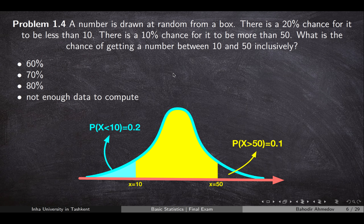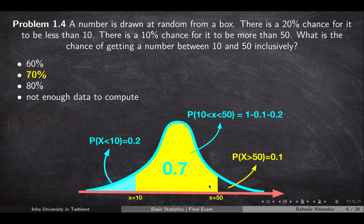A number is drawn randomly from a box. The probability that it's going to be less than 10 is 20%, or 0.2. The probability that it is more than 50 is 10%, or 0.1. Then the probability that it is between 10 and 50 is going to be 1 minus 0.2 minus 0.1, which equals 0.7.